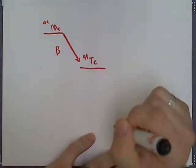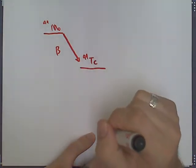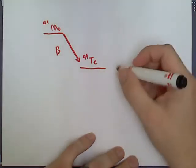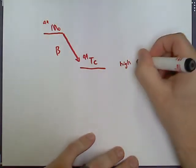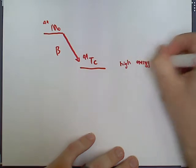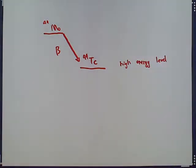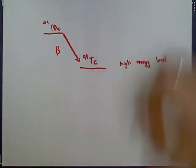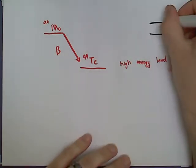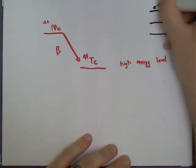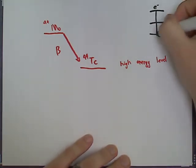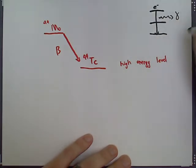So that technetium 99 is at what we call a high energy level. Now that high energy level is very similar to the situation where electrons in the previous energy levels video were already at higher energy levels. So remember in the energy levels video, we could have electrons that were high up on the energy level diagram, and they could drop down energy levels, as a result releasing a photon of energy.